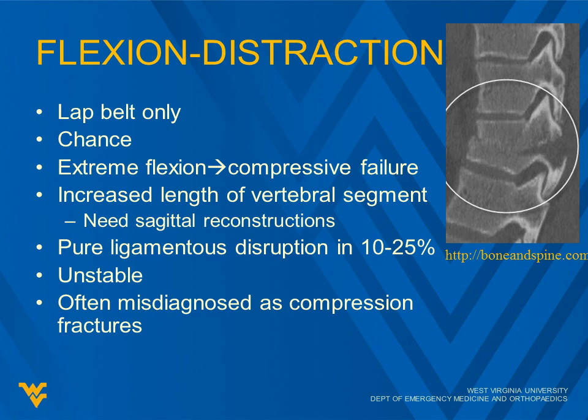Flexion distraction injuries, or chance fractures, were most common with lap belt only use, with sudden deceleration causing extreme flexion and compressive failure. There is increased length of vertebral segment, and you really need sagittal reconstructions to get a great handle on this. Pure ligamentous disruption occurs in 10 to 25%. This is a very unstable fracture and can often be misdiagnosed as a compression fracture.